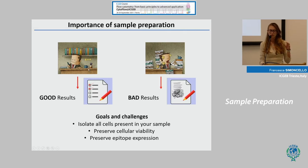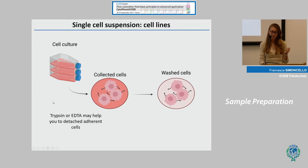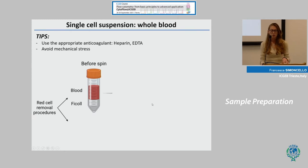The best procedure should allow you to isolate all the cells present in your sample, preserve cellular viability, and also preserve epitope expression. When your starting point is a cell line, you are in the easiest situation. You collect your cells — if they are adherent, trypsin or EDTA may help detach them. Once collected, wash the cells with PBS to remove contaminating proteins or debris, then resuspend at the right concentration and your sample is ready to be labeled.